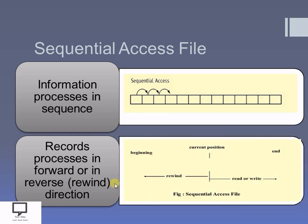To explain this concept, I have one diagram. Currently, my cursor is approximately in the middle of the file. From this cursor position, if I am performing any operation — read or write — towards the end of the file, this is the forward direction. But oppositely, if from the current position towards the beginning of the file, one by one, you are accessing the records, that is the rewind direction or reverse direction. All this process happens in sequence, which is why this type of file is called a sequential access file.